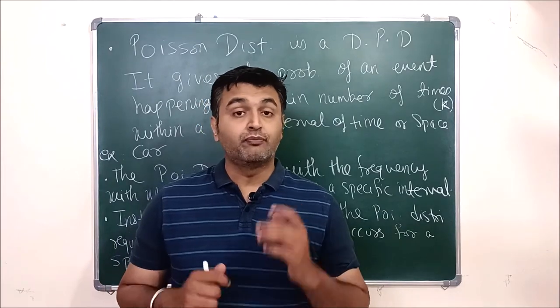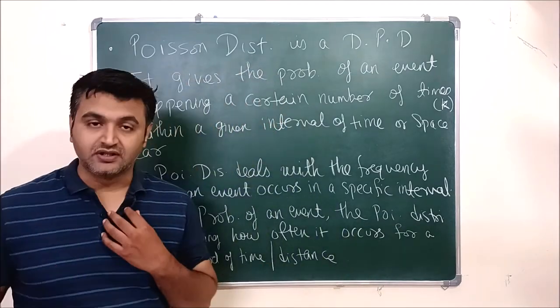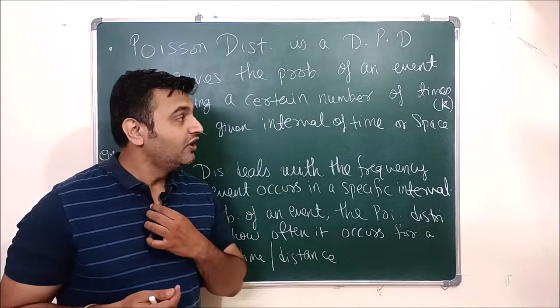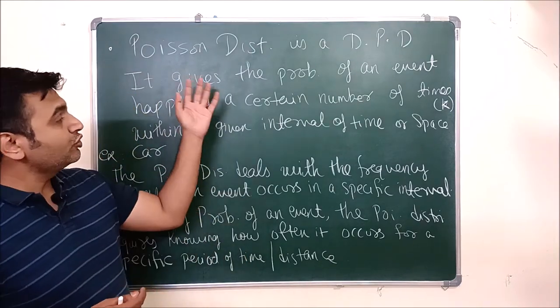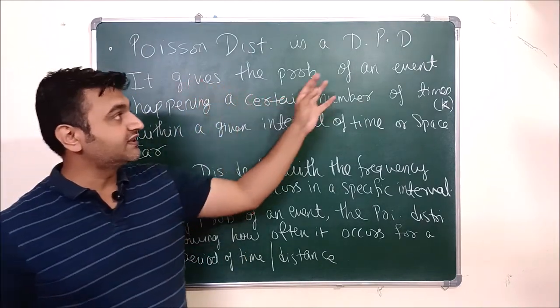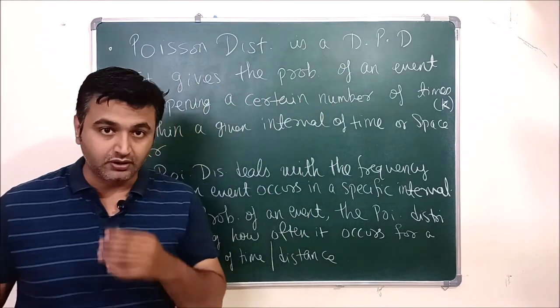Today we are going to talk about Poisson distribution. Poisson distribution is a discrete probability distribution.